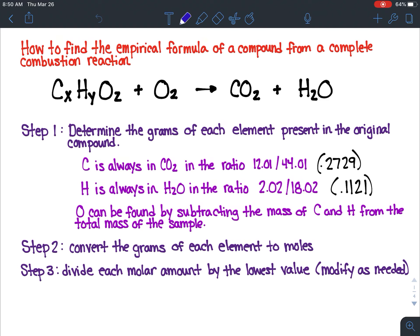Step one is to determine the grams of each element present in the original compound. Carbon in carbon dioxide is always found in the ratio of 12.01 to 44.01, so we're always going to have a ratio of 0.2729, or 27.29% of carbon dioxide is carbon. Hydrogen is always in the ratio of 2.02 to 18.02, so 11.21% of water is hydrogen. We're going to use that information to calculate how many grams of hydrogen and carbon are in each one of these samples. Oxygen will then be found by subtracting out the mass of the carbon and hydrogen from the original mass of the sample before the combustion reaction occurred.